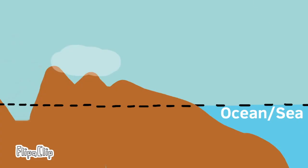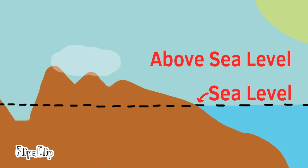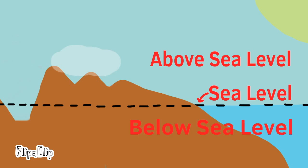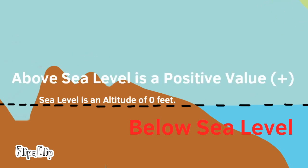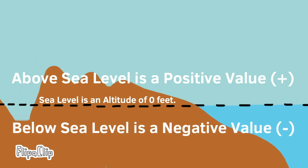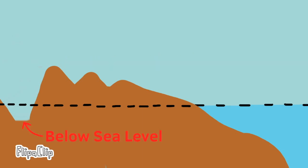A lesson in elevation. Here's a simple illustration with the ocean, mountains, and a valley. The black dotted line represents sea level. Above the line would be above sea level, and below the line would be below sea level. Sea level is an altitude of 0 feet. Above sea level is a positive value, and below sea level is a negative value. This mountain top represents an elevation above sea level, and the valley floor represents an elevation below sea level.